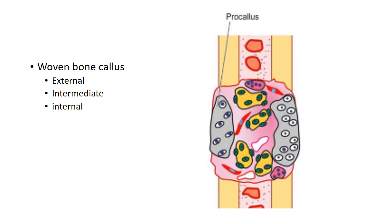The next stage is formation of woven bone callus. In this stage, a callus composed of woven bone is formed. The cells of the inner layer of periosteum have osteogenic potential — they have the potential to transform into osteoblasts and lay down bone. These osteogenic cells lay down osteoid matrix, which undergoes calcification to form woven bone callus.